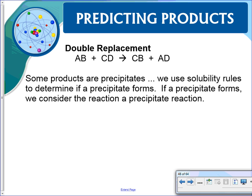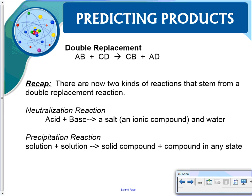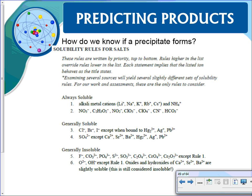Now for double replacement: some products are precipitates. In a double replacement you get a compound from a compound. You have two types of double replacement: a neutralization reaction (acid + base giving salt and water), and a precipitate reaction where two solutions combine to form a solid compound. One of the products must form a solid.